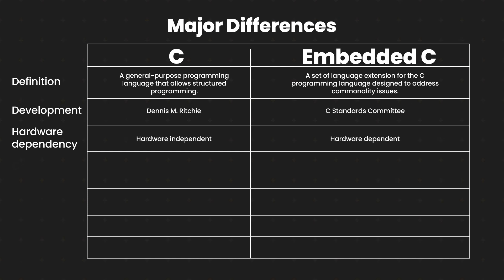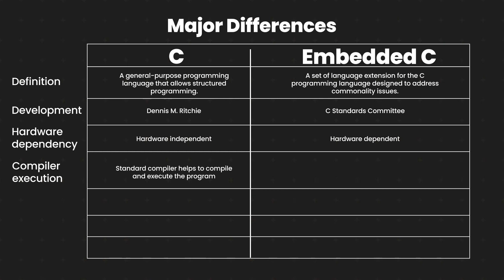Next up the list we have compilation and execution. The C programming language is a compiler-based programming language. Therefore, it executes faster, and the standard compiler helps to compile and execute the program. Whereas embedded C requires specific compilers that are capable of generating microcontroller-based outputs.